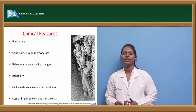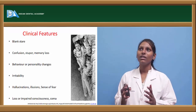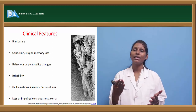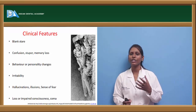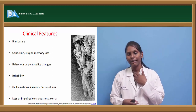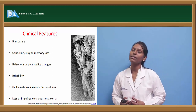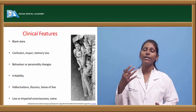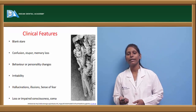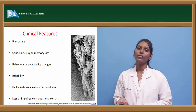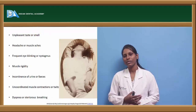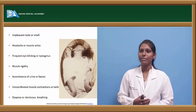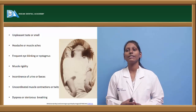Coming to generalized clinical features, patients usually have a blank stare and facial expression. At the time of epilepsy, patients are usually in confusion, exhibiting stupor, memory loss, and behavioral or personality changes. Patients are usually irritable, have hallucinations, illusions, and a sense of fear. Loss or impaired consciousness, and in severe cases, coma. They also have unpleasant taste or smell, headache, muscle aches, frequent eye blinking or nystagmus, muscle rigidity, and incontinence of urine and feces.